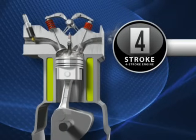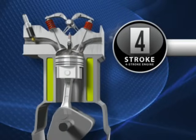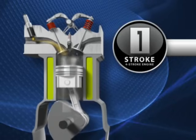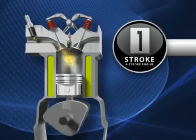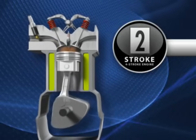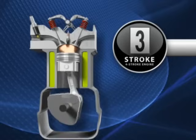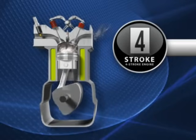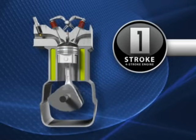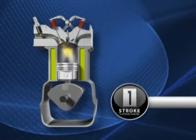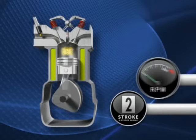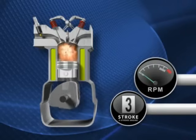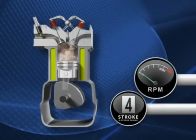When the piston reaches the top of this stroke, the intake valve opens and the cycle begins all over again. It takes one up and down motion, or two strokes of the piston, to create one revolution of the crankshaft. RPMs, or revolutions per minute, is how many times the crankshaft rotates within that minute.